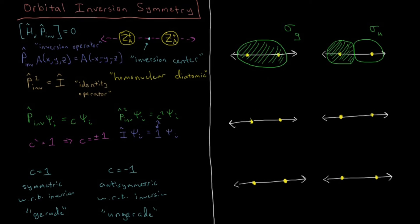If we have two p orbitals overlapping constructively — like a px and py from the previous video — the net result is a pi bonding orbital, positive on one side and negative on the other. The inverse of each point switches plus to minus and minus to plus, so this pi bonding orbital is ungerade — pi u. Notice: the bonding sigma orbital is gerade, but the bonding pi orbital is ungerade. G and U don't indicate whether something is bonding or antibonding; they just indicate symmetry with respect to inversion.